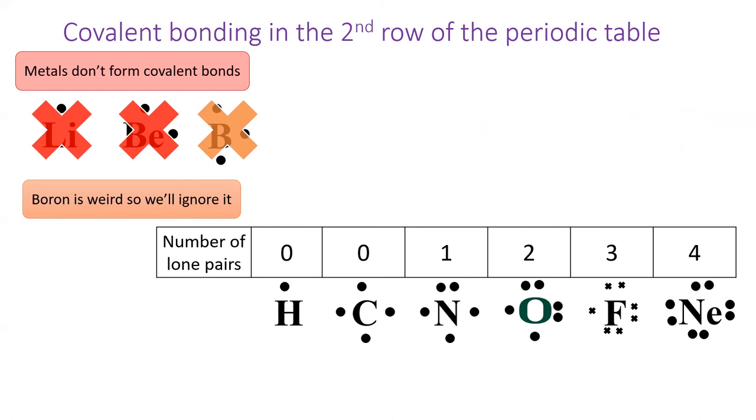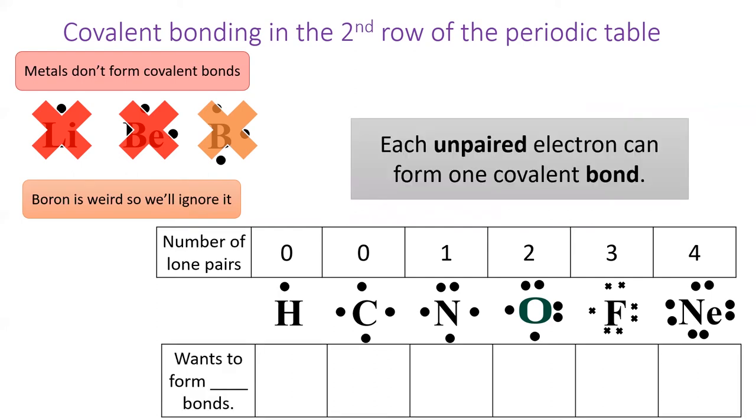From what's remaining, we see that as we move right on the table from carbon, we increase the number of lone pairs around each atom. Each unpaired electron can form one covalent bond, meaning that these six common elements can form this given number of covalent bonds.